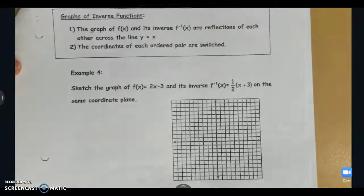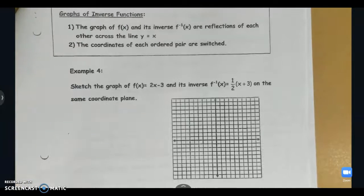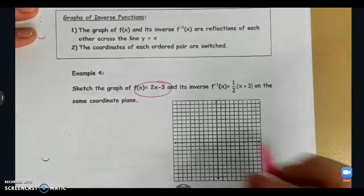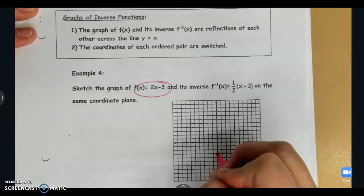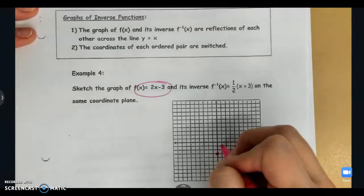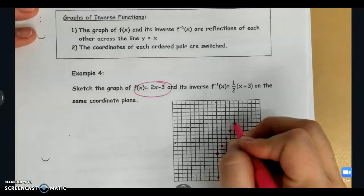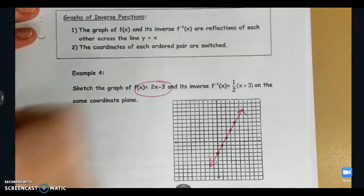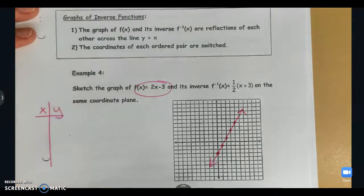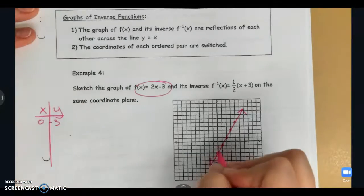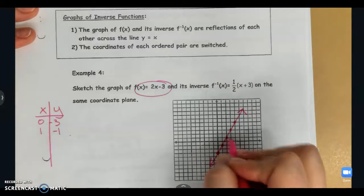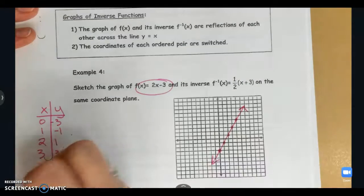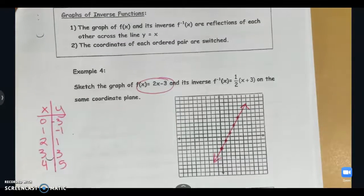The last page, graphing inverses, is a lot easier than it sounds. Let's start by first graphing our initial function 2x minus 3. The y-intercept is negative 3 and my slope is 2. So I'm just going to go up 2 and over 1 a couple different times just to get some points on my graph and then connect them. So there's my initial graph. And if I make a table of these values, that would be 0 negative 3, 1 negative 1, 2 positive 1, 3 positive 3, and 4 positive 5. So those are just some points on my initial graph.